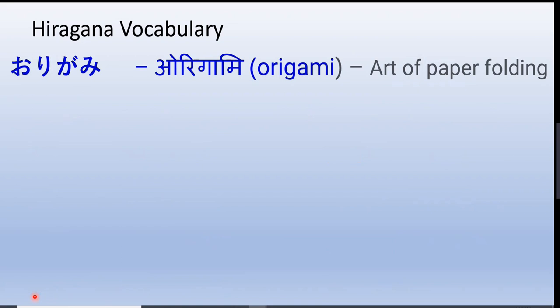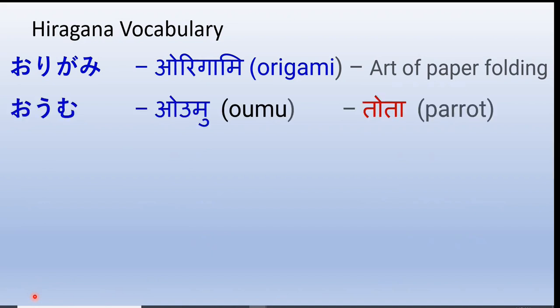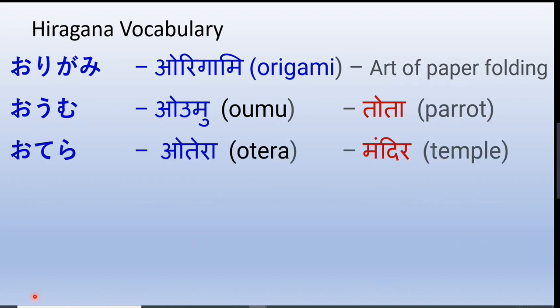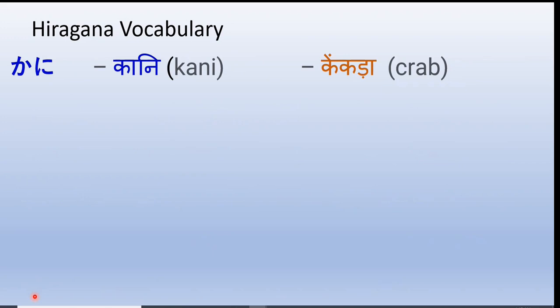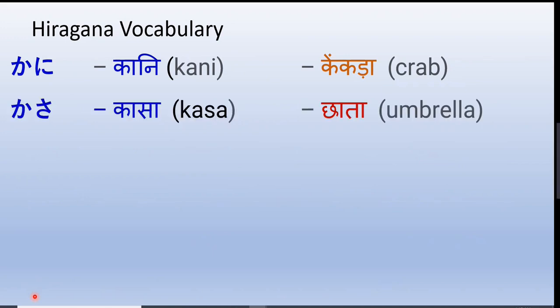Origami is a very famous art of Japan that deals with paper folding — making different kinds of artifacts like flowers using paper. Oumu — parrot. Otera — temple. Ohayou — good morning. Kani — crab. Kasa — umbrella. This is the Japanese umbrella, which is again a world-famous item, and people who go to Japan definitely bring one.